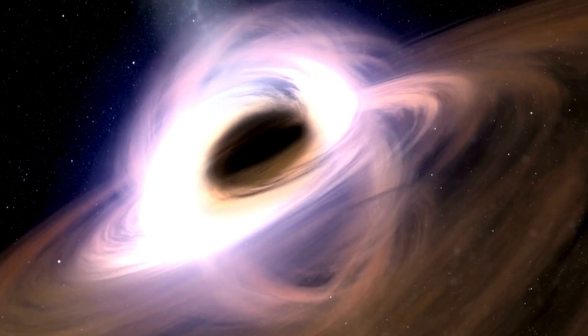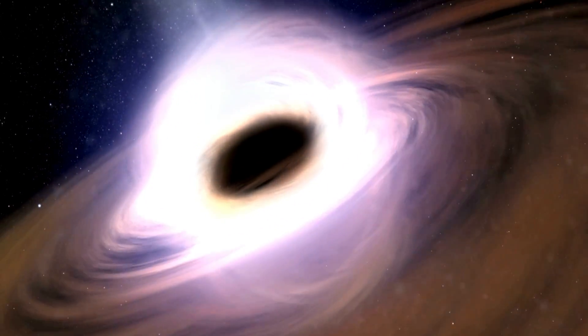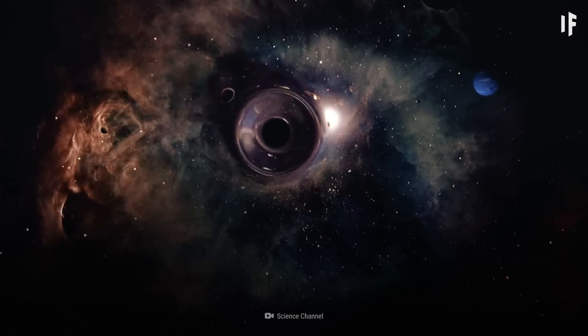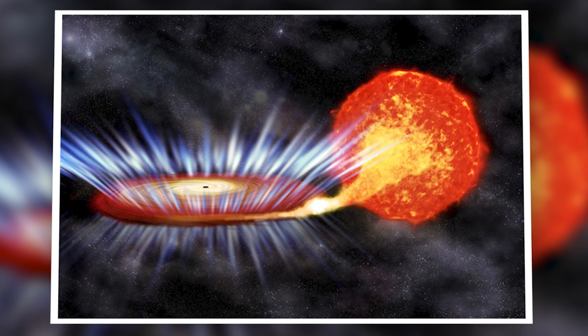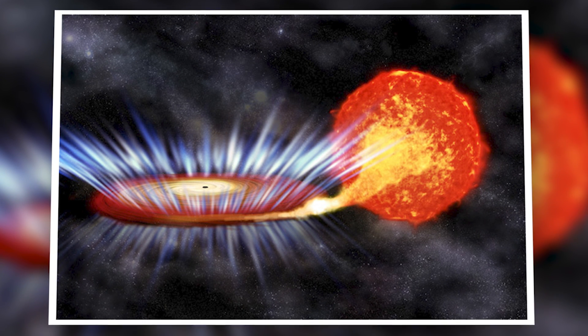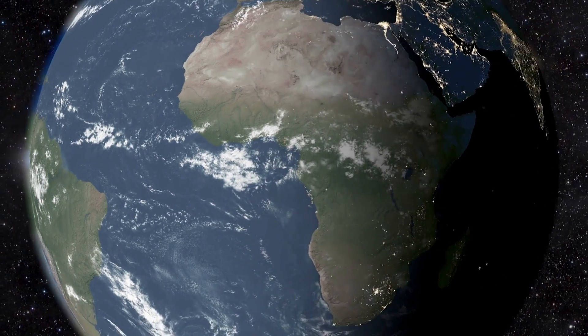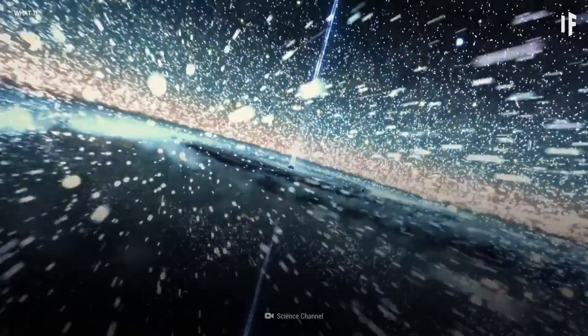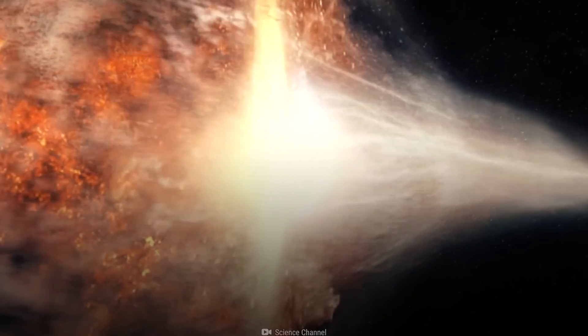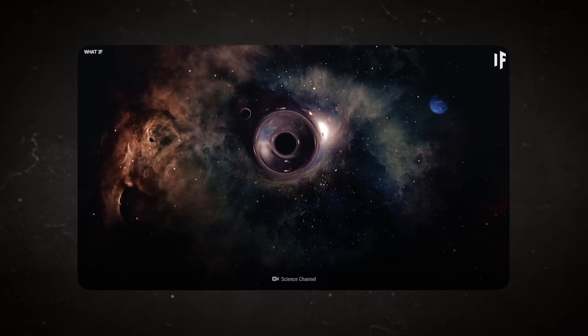In addition, black holes can spin the fabric of space around themselves at incredible velocities, more than 950 times per second. A black hole known as GRS 1915+105 is whirling in the constellation Aquila the Eagle, which is roughly 35,000 light years from Earth, at more than 333 million miles per hour or roughly half the speed of light. An object placed on the edge of the black hole's event horizon would spin around it.